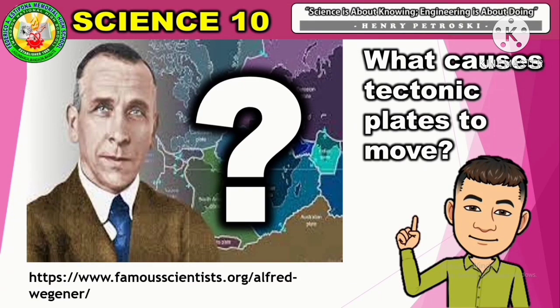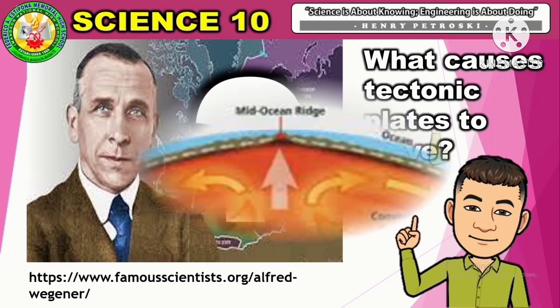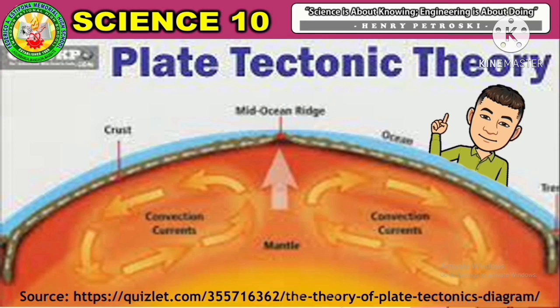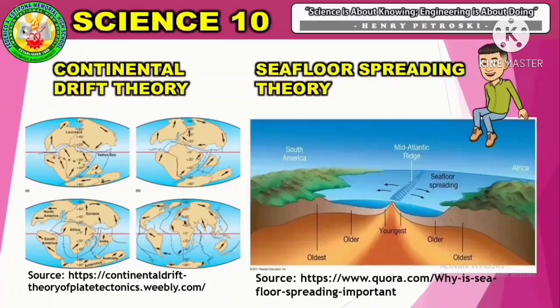What causes tectonic plates to move? This is one of the main questions that remained unanswered since Alfred Wegener proposed the Continental Drift Theory. The plate tectonic theory provided an explanation about the movement of the lithospheric plates. This theory evolved from two former theories and was developed during the first decades of the 20th century.